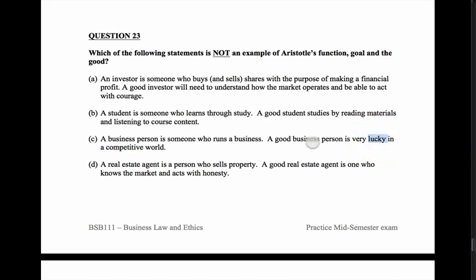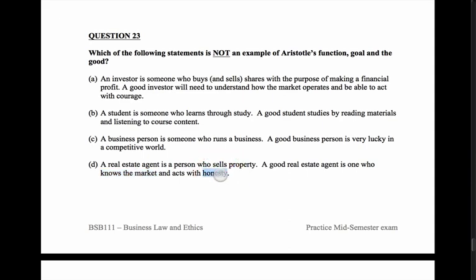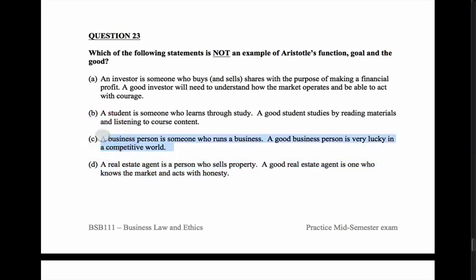A real estate agent is a person who sells property — that's their goal. A good real estate agent knows the market and acts with honesty — those are virtues. So the one that isn't an example of Aristotle's function, goal, and the good is C, quite clearly — it does not meet the requirements.